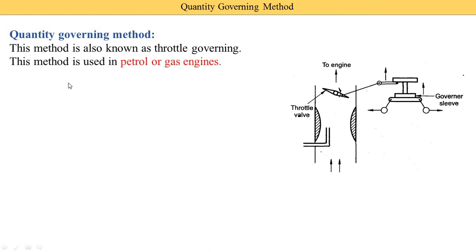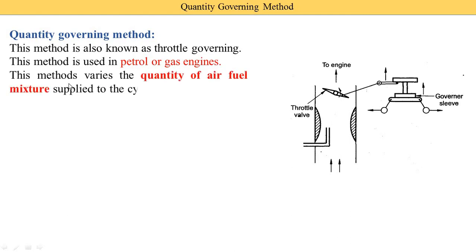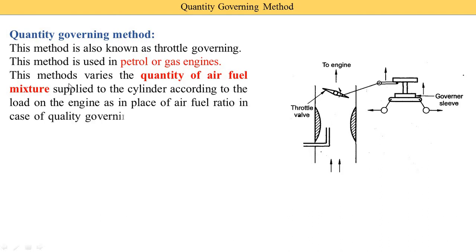This matter is generally used in petrol and gas engines. This matter varies the quantity of air-fuel mixture supplied to the cylinders according to the load on the engine. In quality governing, the quality of the air plus fuel is changed. But in quantity governing, quality remains the same — the air-fuel ratio is the same and is not changed. Only the quantity supplied of this mixture is changed.